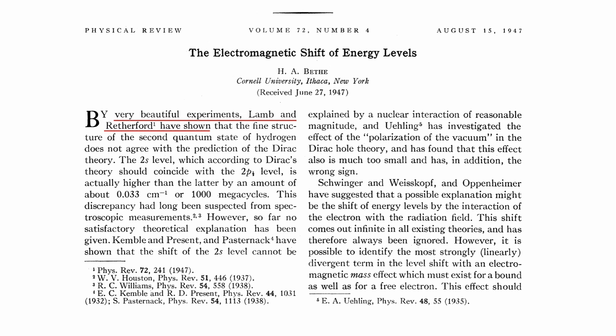Lamb and Rutherford used this to conduct, in Bethe's words, some very beautiful experiments. These show that the 2s level of the hydrogen atom, which should have the same energy as the 2p level in both the Schrodinger and Dirac theories, is actually higher by about 1000 megacycles, or one gigahertz. This is on the order of only about one millionth the energy of a typical hydrogen transition.